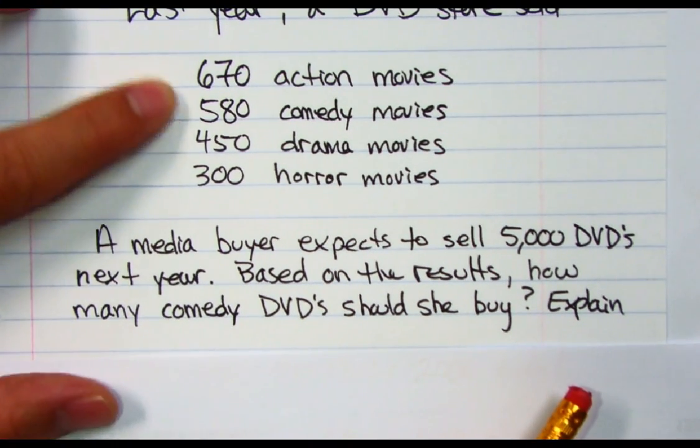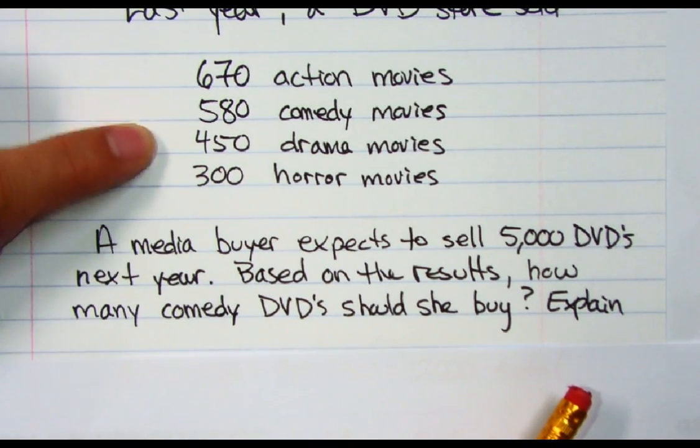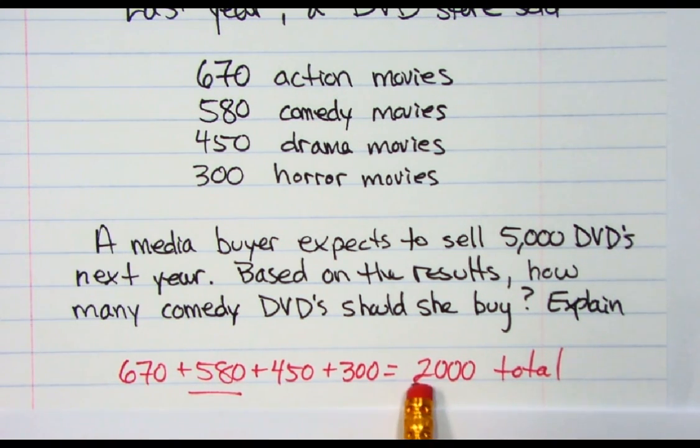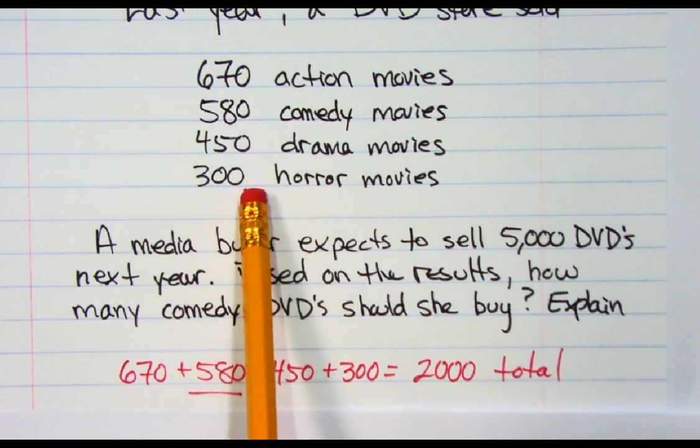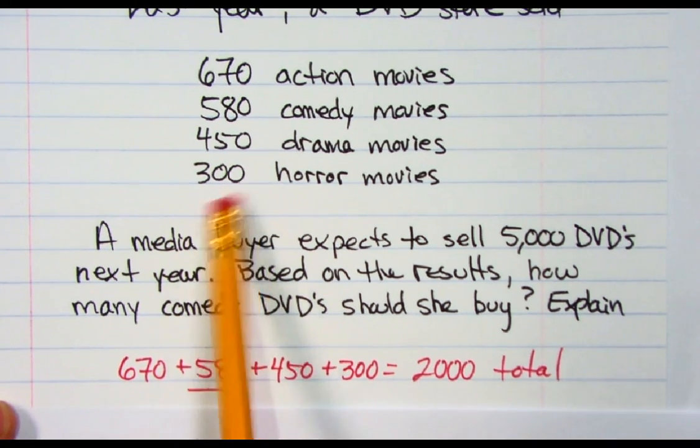First, I'm going to take a look at what did I sell last year. If I add this up together, I'd get 2,000 total movies. We sold 2,000 movies.